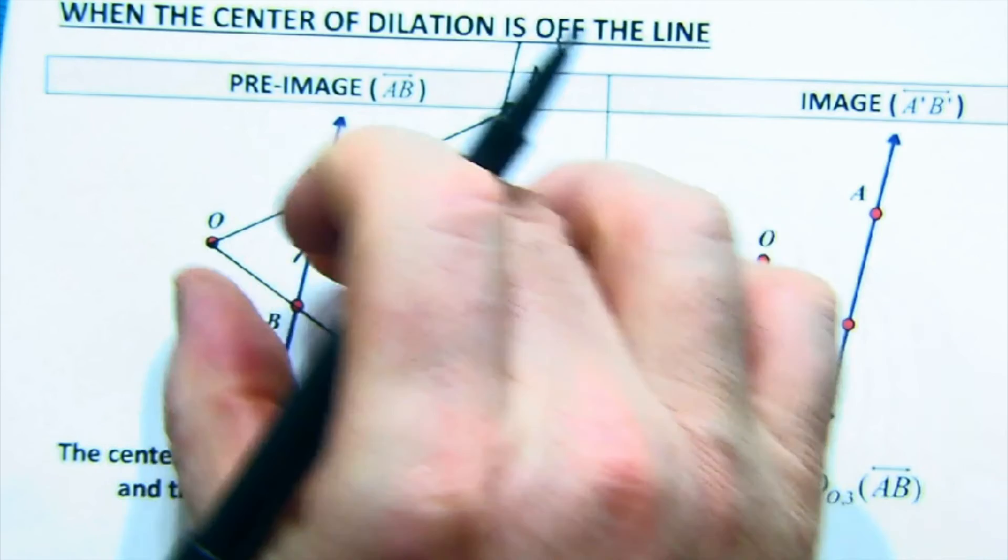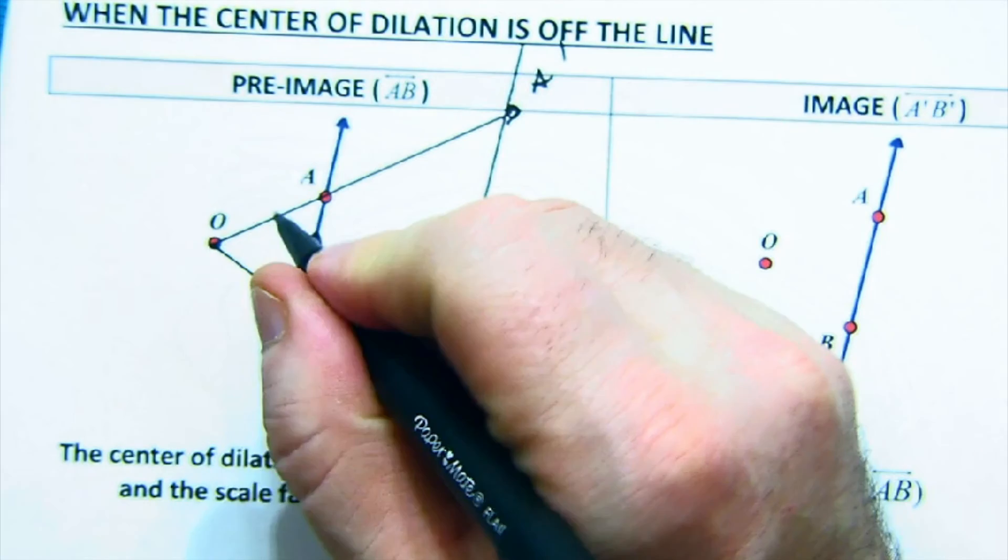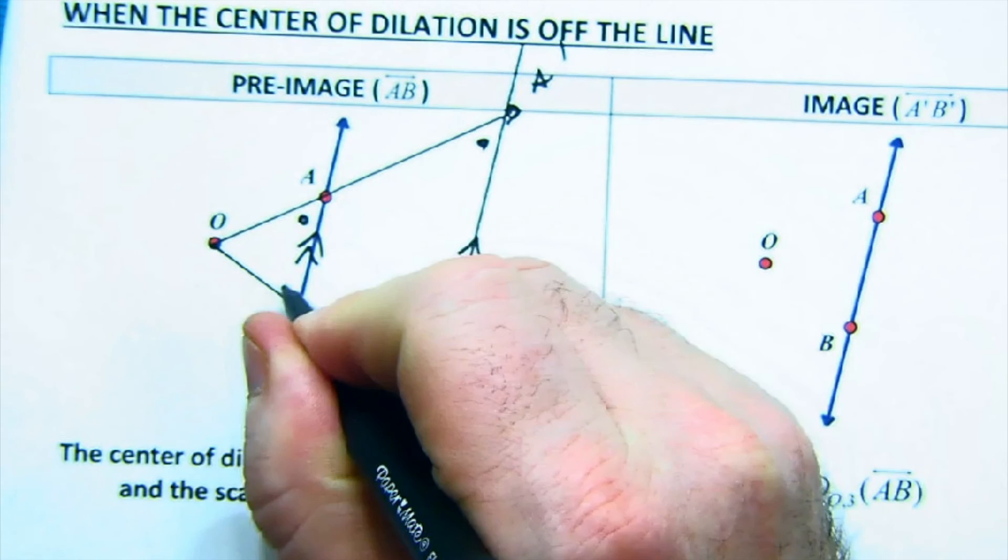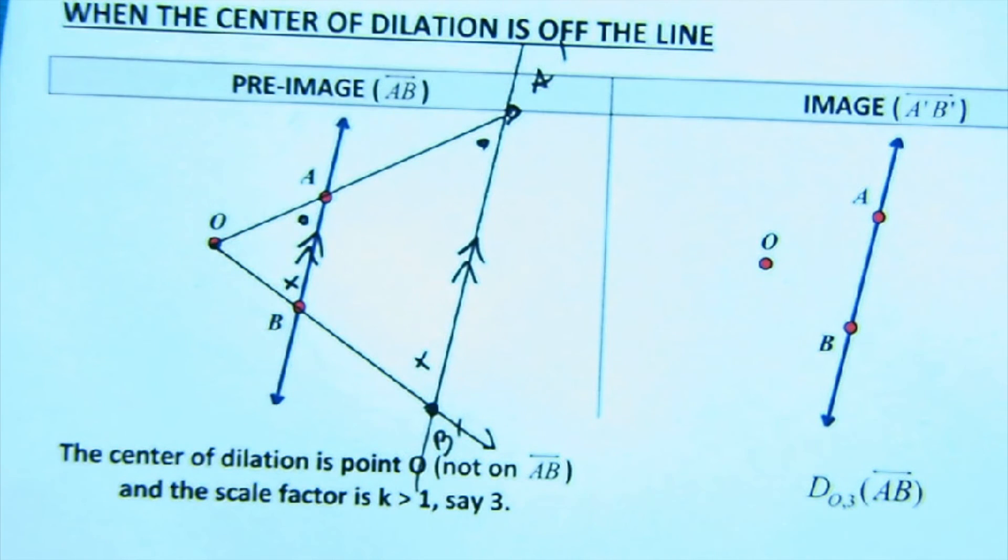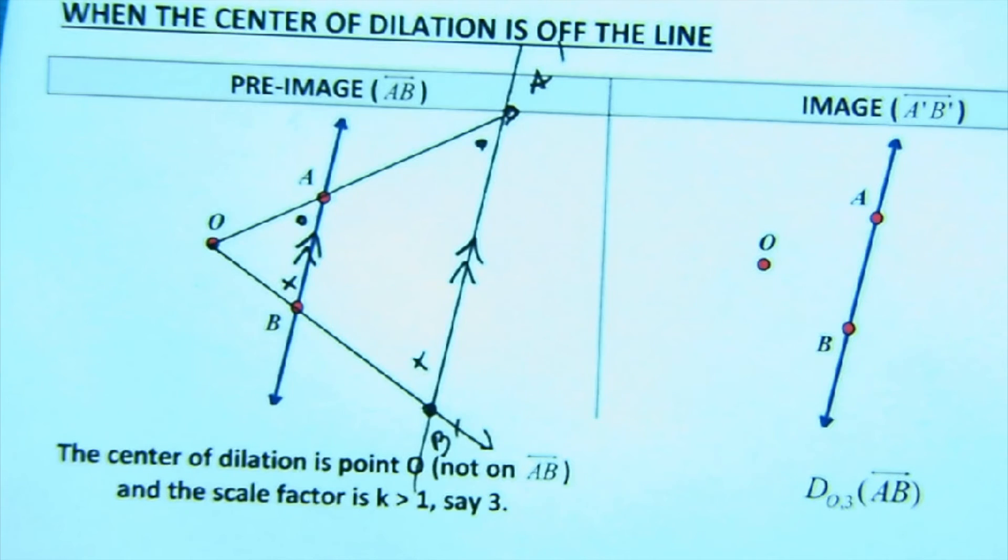Part of the power of this is you would get a set of parallel lines. Dilations hold angles intact. Because things are proportional, they hold all their angles together - this angle matches this one, this one matches this one.